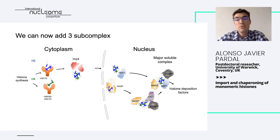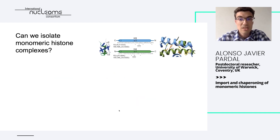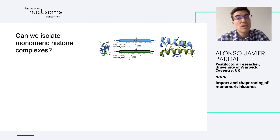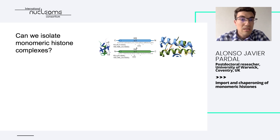To answer these questions, we tried to generate mutations that would prevent dimerization, using a trapping strategy. We designed two different types of mutations: one disrupting the alpha-2 helix, which is essential for the histone fold, by inserting three glycines in the middle of it and adding torsional freedom — we call this a helix breaker mutation.